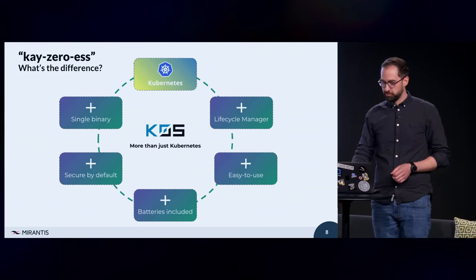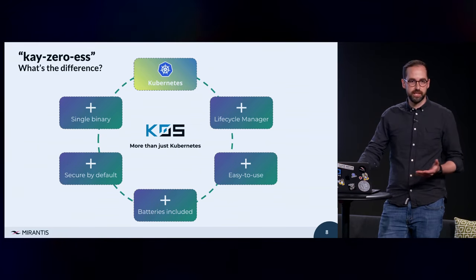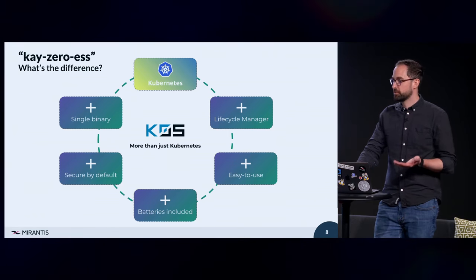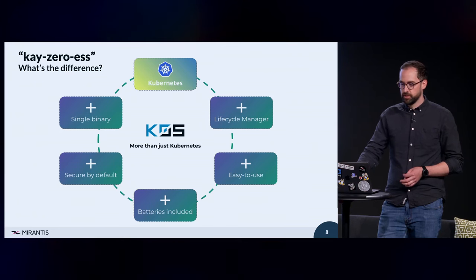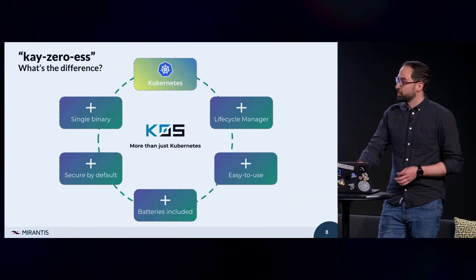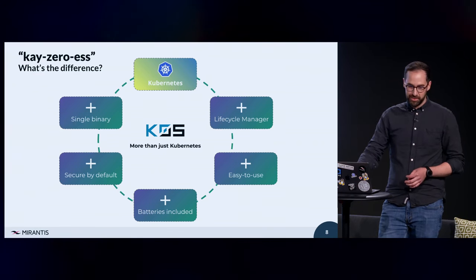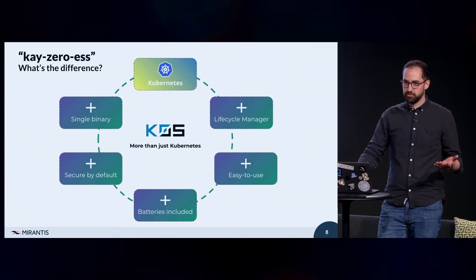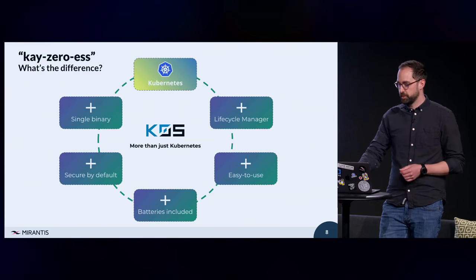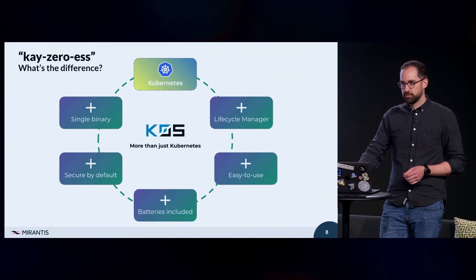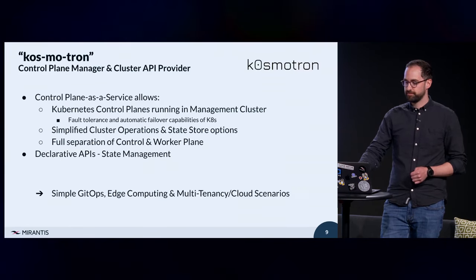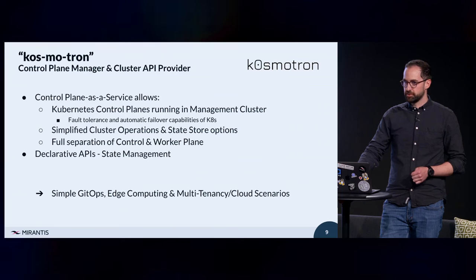Batteries included but swappable — we include a CNI, for example, and also different other options like Kine and Connectivity. For lifecycle management there are different options: you can use just the binary, you can use a CLI, and you can use an operator. A Kubernetes operator is a service that can handle custom resource definitions in Kubernetes. That's where Cosmotron comes into play.